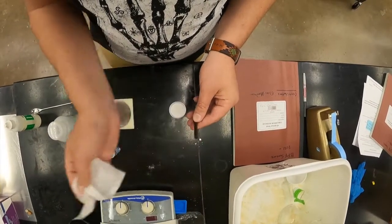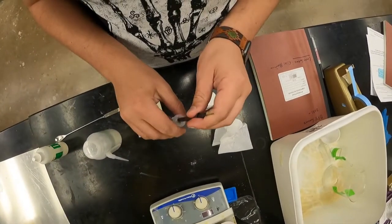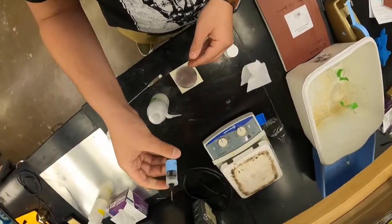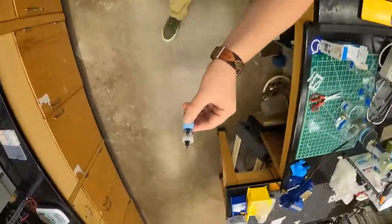And wipe it off with a chem wipe, making sure not to touch the electrode you just polished, and then drop it into that 18 mega ohm water again, and take it to the sonicator for five minutes.